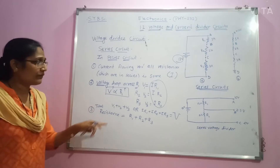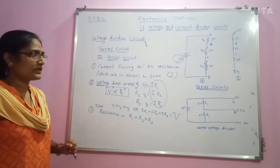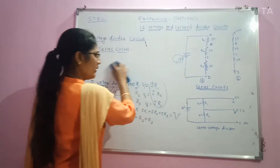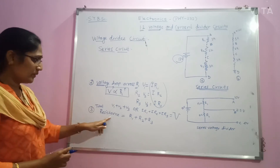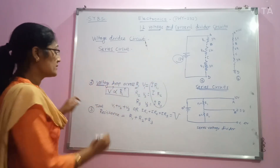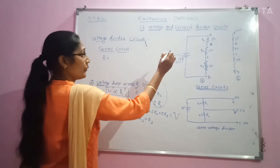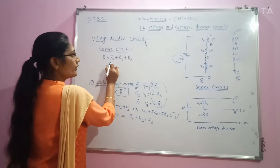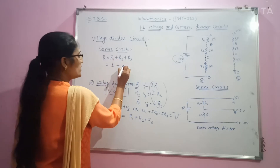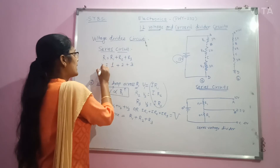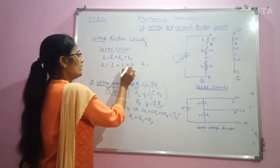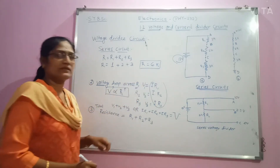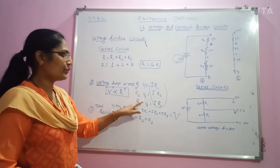Now we will find the values of V1, V2 and V3 for this series circuit. The total resistance R = R1 + R2 + R3. R1 = 1 kΩ, R2 = 2 kΩ, R3 = 3 kΩ, so the total resistance R = 1 + 2 + 3 = 6 kΩ. Now we have to calculate V1, V2 and V3.